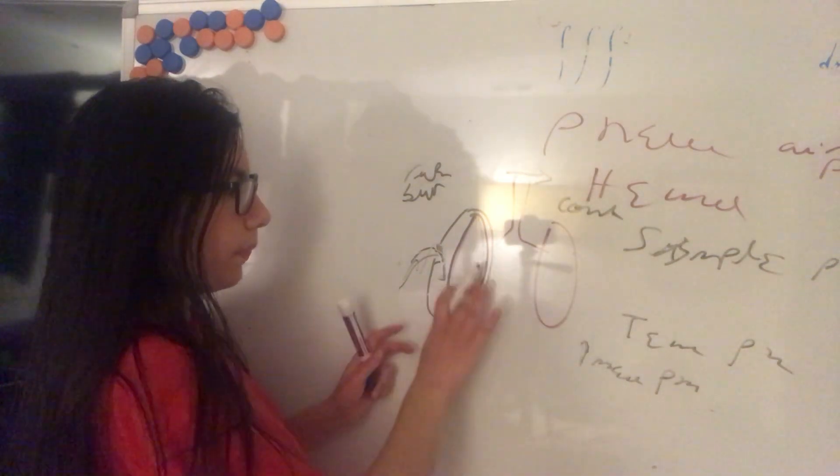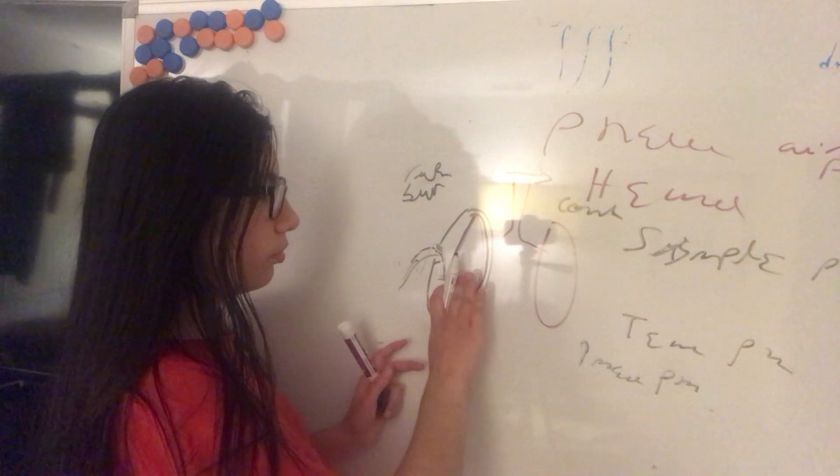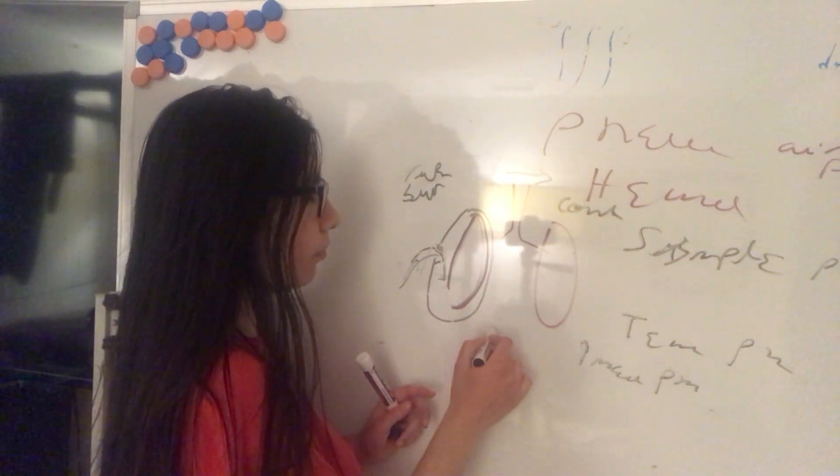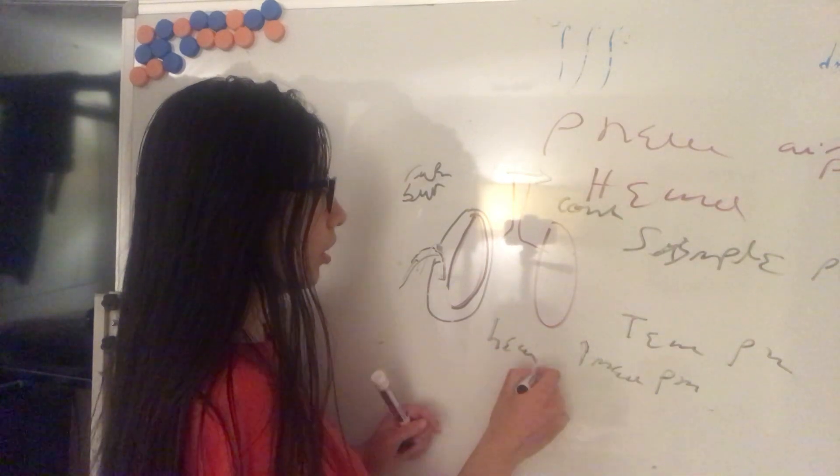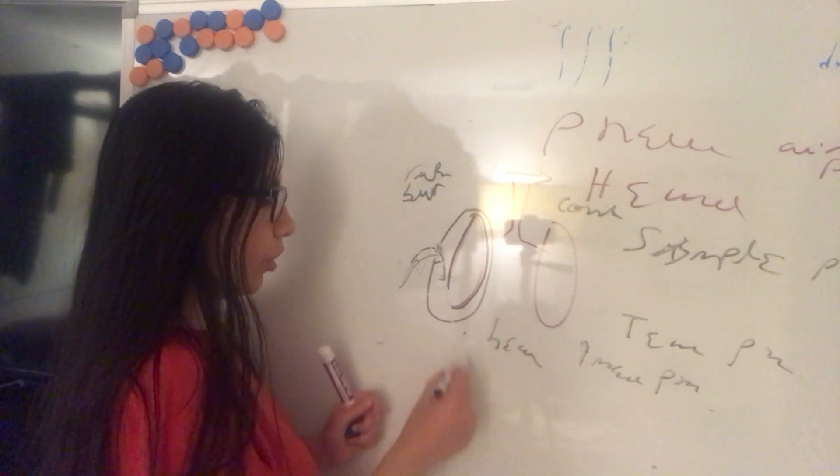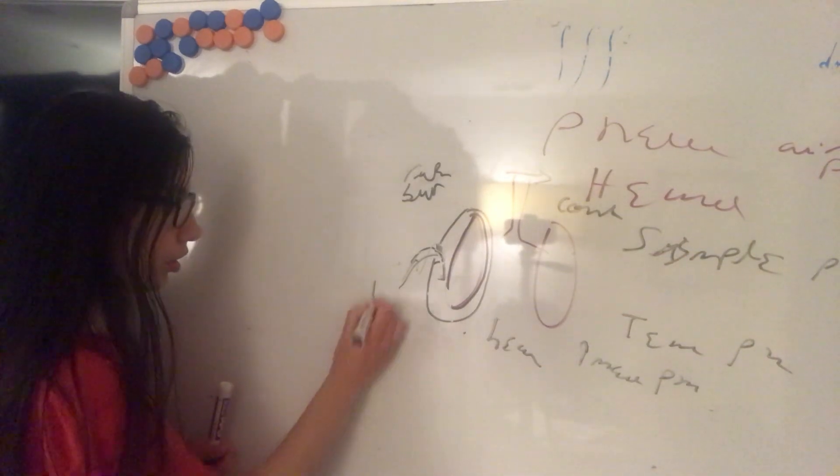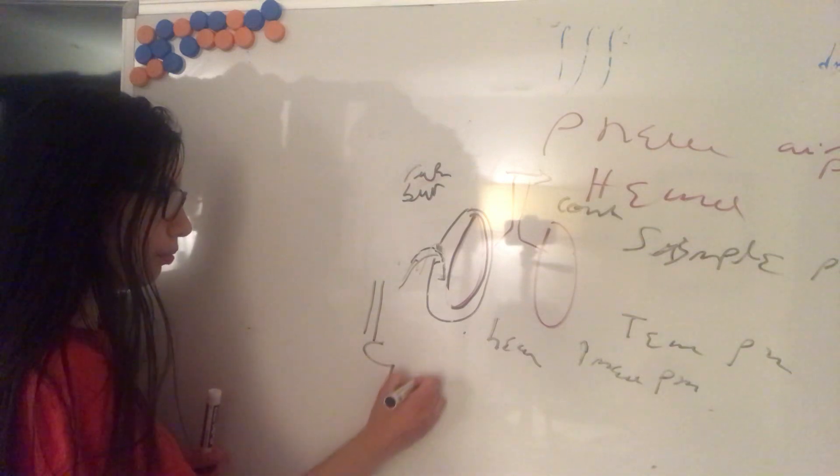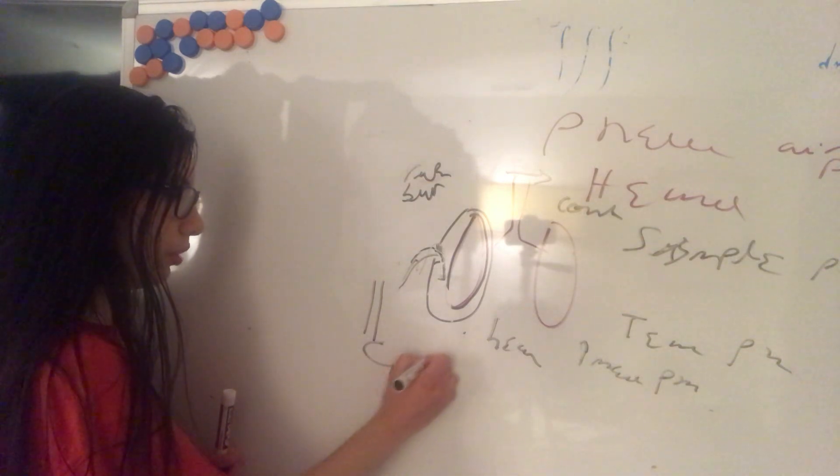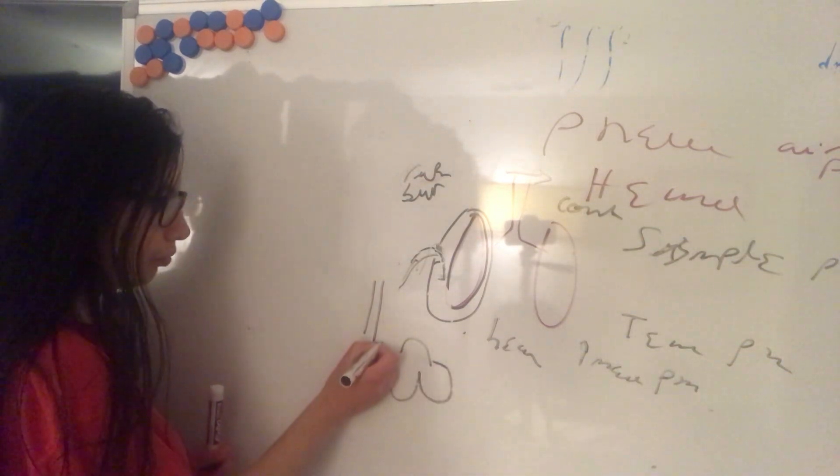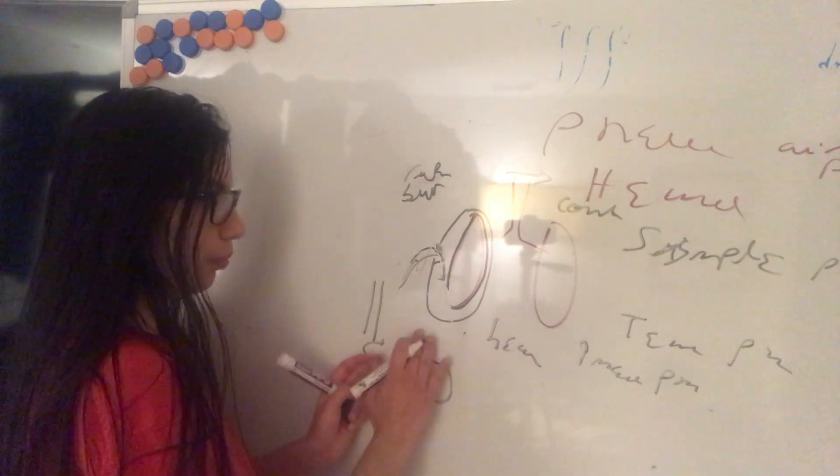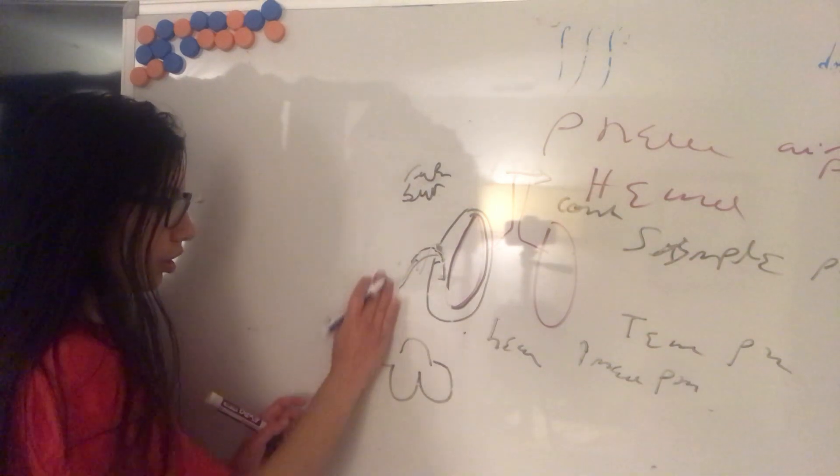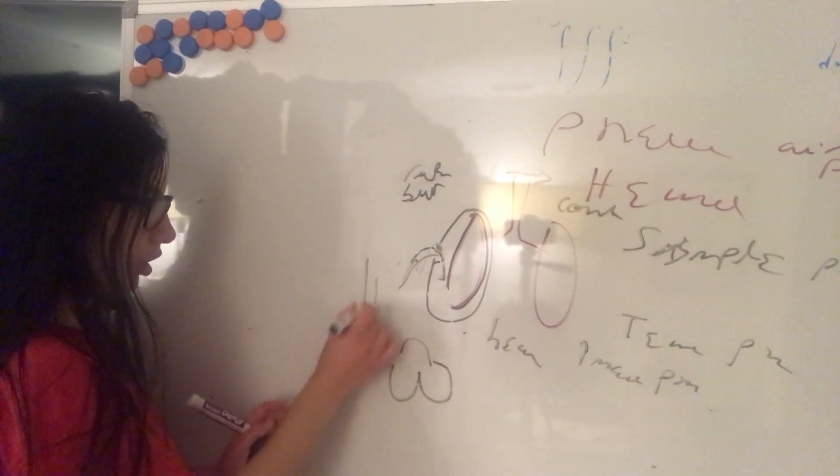Also the mediastinal structures like the lungs, the heart and the superior vena cava. So here we have the superior vena cava. This is the heart, the right atrium, right ventricle, left ventricle, left atrium. So the heart is being pulled or pushed to the contralateral side and so the vena cava is not draining to the right atrium.